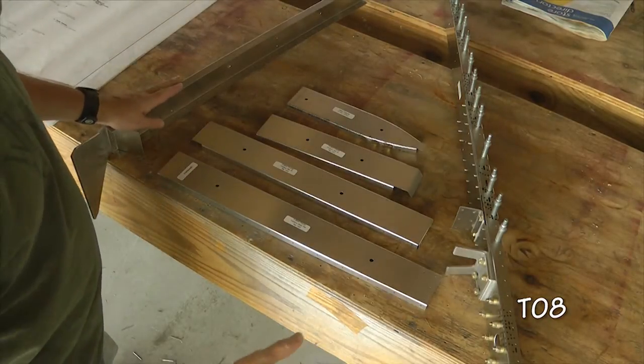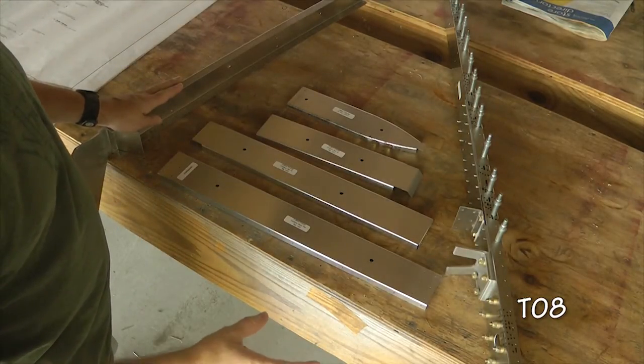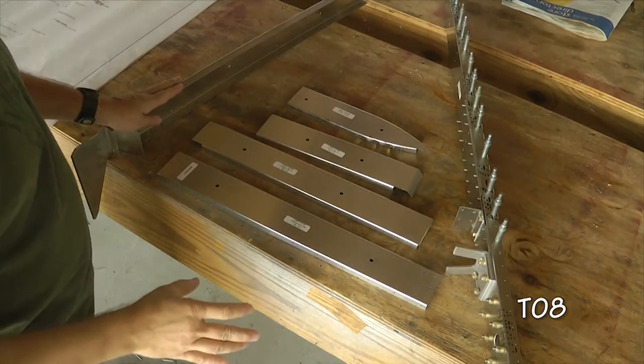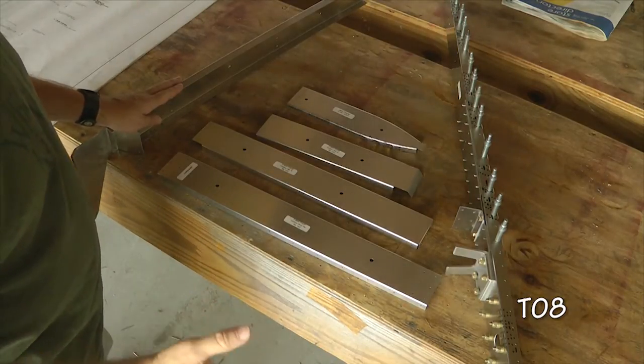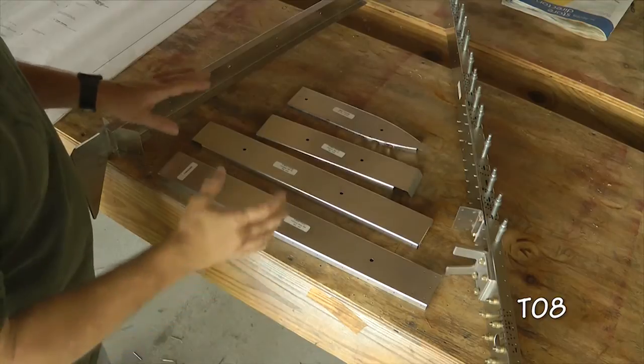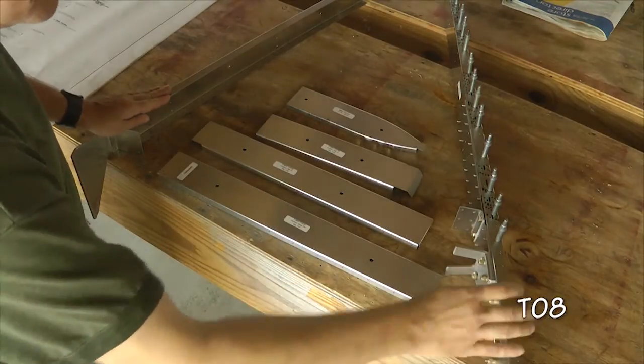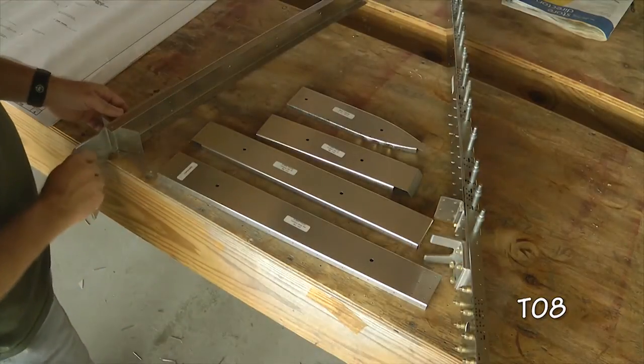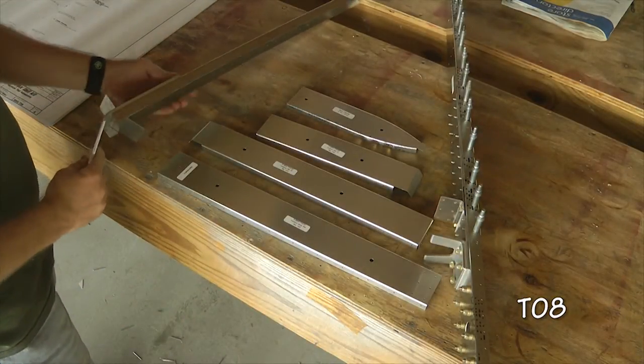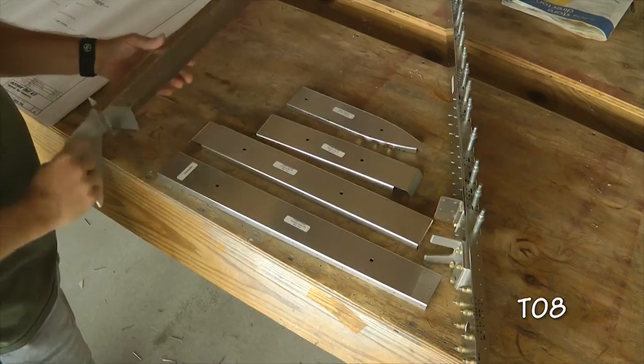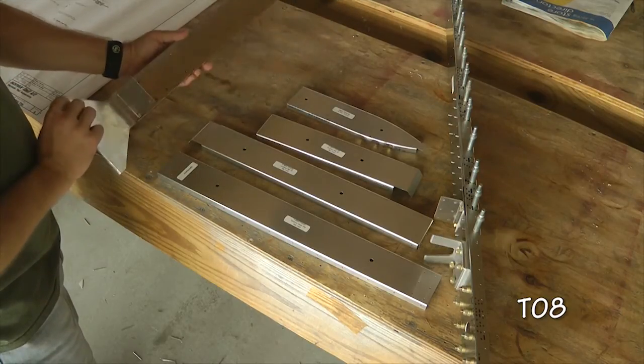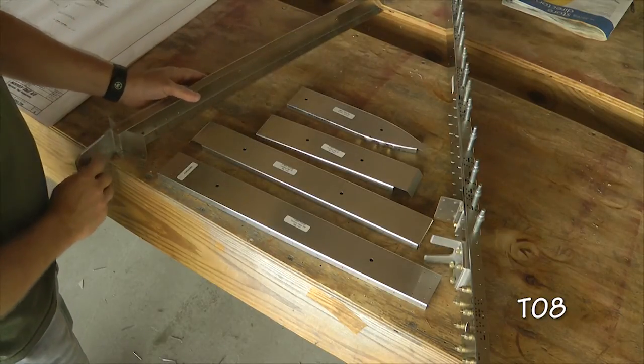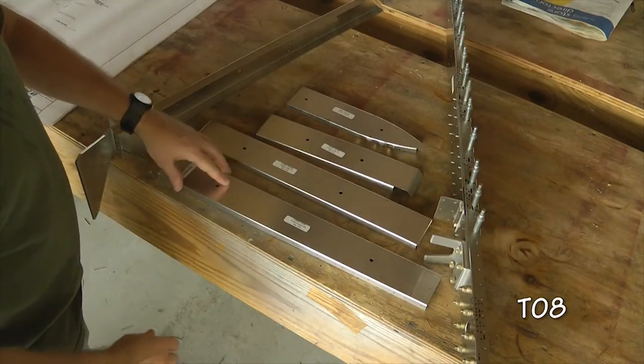Now we can assemble the skeleton for our vertical stabilizer at this stage. Looking at page T08 we basically need just a few components. We need our main spar that we assembled previously, the front spar or forward spar that we assembled previously, and then just a number of four ribs.